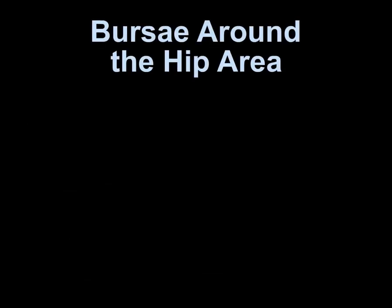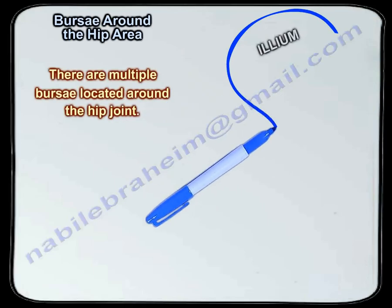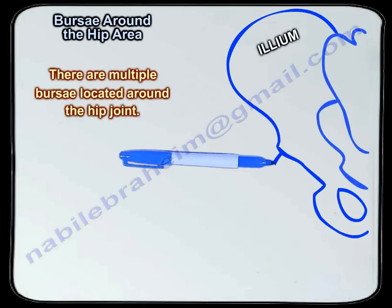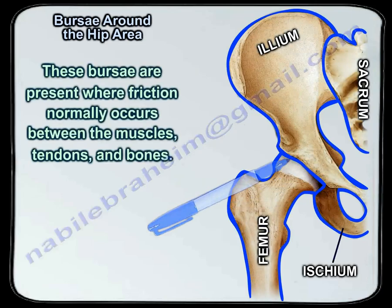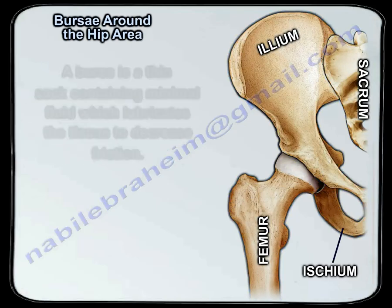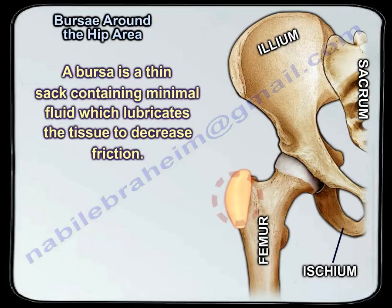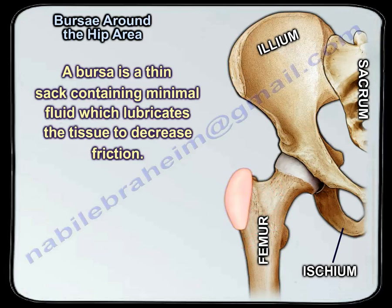There are multiple bursa located around the hip joint. These bursa are present where friction normally occurs between the muscles, the tendons, and the bones. A bursa is a thin sac containing minimal fluid, which lubricates the tissue to decrease friction.